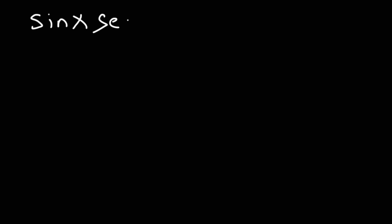Let's begin with the first problem: sine x times secant x equals tangent x — go ahead and verify this. We're going to use step one and convert everything into sine and cosine. You could start with the left side, the right side, or both — as long as you show they're equal. Personally, I like to keep the right side the same and convert the left side to match it.